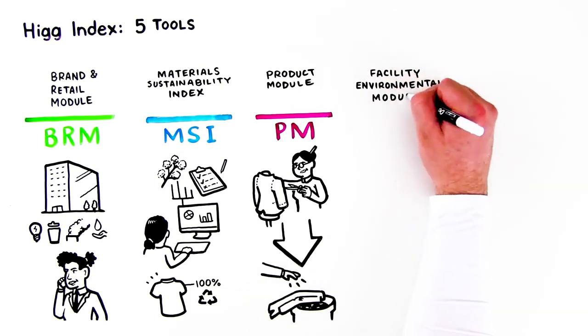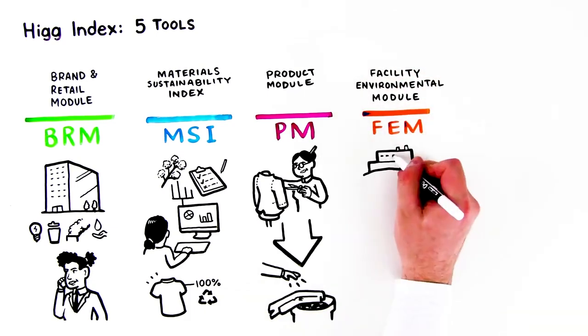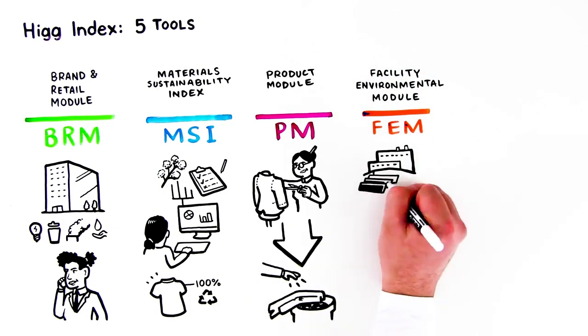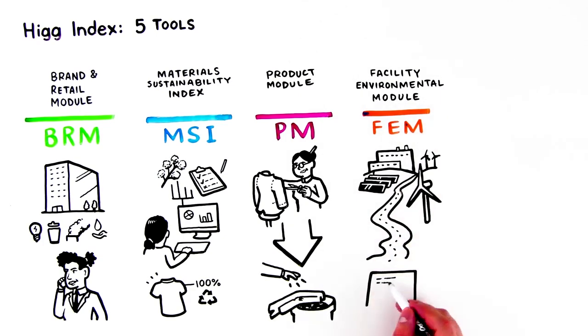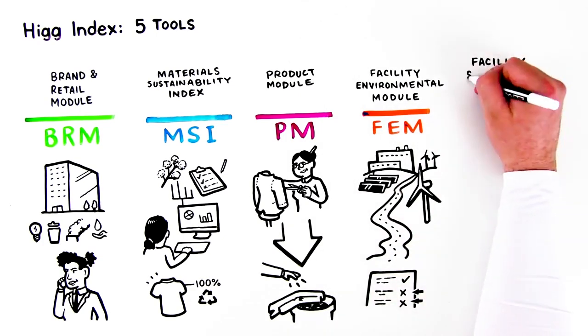The HIG Facility Environmental Module, or FEM, measures the environmental performance of an individual facility, helping manufacturers find opportunities for improvement.